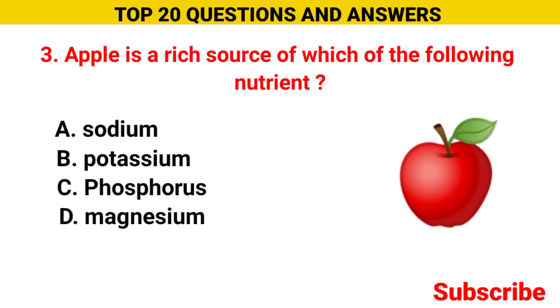Apple is a rich source of which of the following nutrient? Option A sodium, option B potassium, option C phosphorus, option D magnesium. The correct option is option B, potassium.